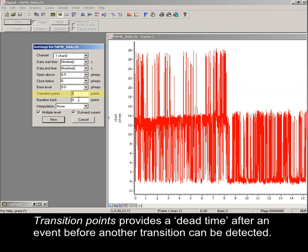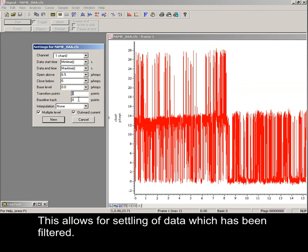Transition points provides a dead time after an event, before another transition can be detected. This allows for settling of data which has been filtered.